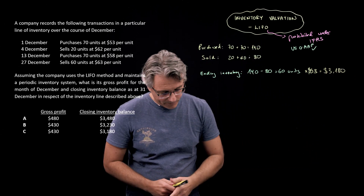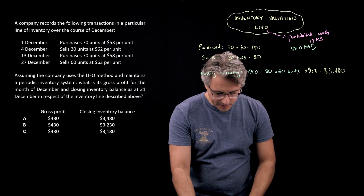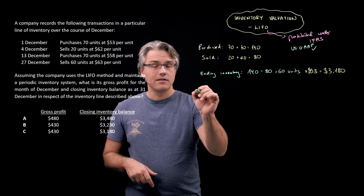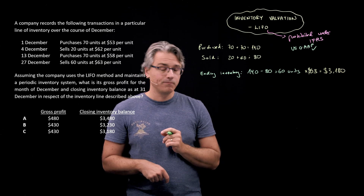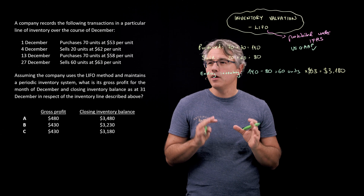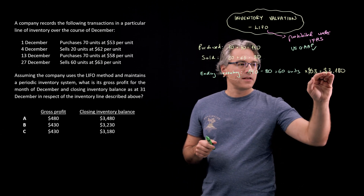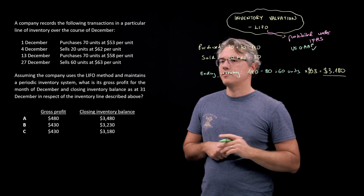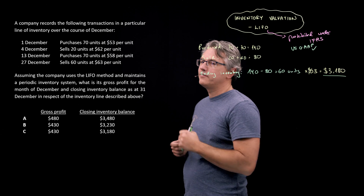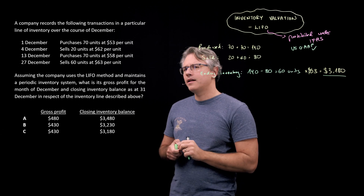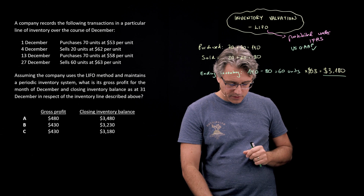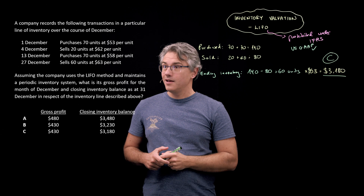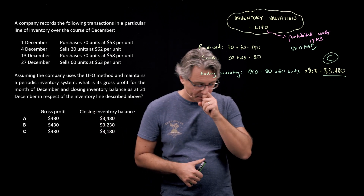Now I'll calculate the total value of goods available for sale. But actually, $3,180 is already enough to solve the question — I can see it matches one of the answer choices for the closing inventory balance, corresponding to answer C. So we've identified the answer, but I still want to calculate gross profit to confirm.